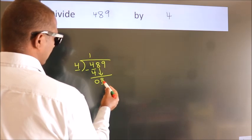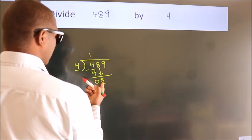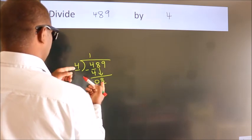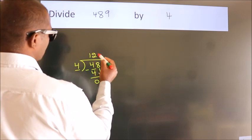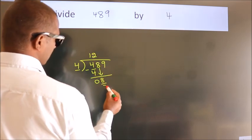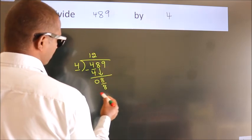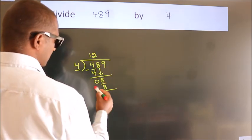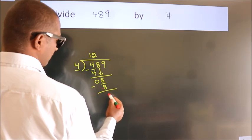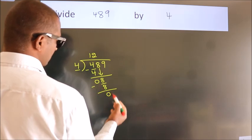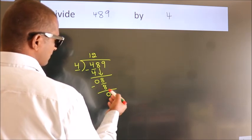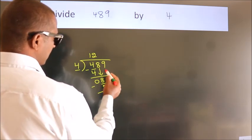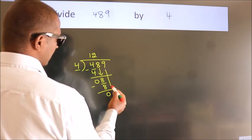So now we have 8. When do we get 8 in the 4 table? 4 twos are 8. Now we subtract, and we get 0. After this, bring down the beside number, so 9 comes down.